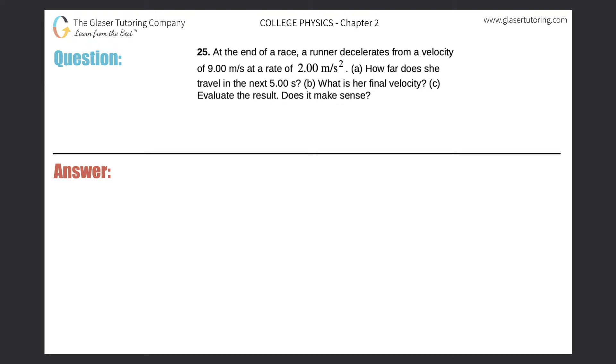Number 25. At the end of a race, a runner decelerates from a velocity of nine meters per second at a rate of two meters per second squared. How far does she travel in the next five seconds?